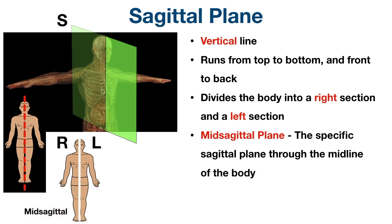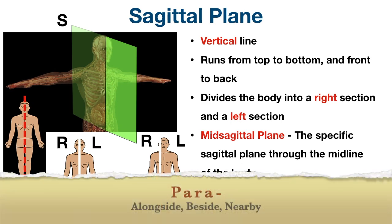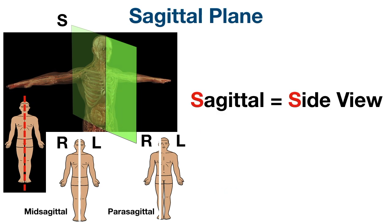The pictures on screen are examples of a mid-sagittal plane. A parasagittal plane is any sagittal plane off center, dividing the body into unequal right and left portions. Parasagittal planes run parallel or alongside the mid-sagittal plane but are not in the midline. The prefix 'para' means alongside, beside, or nearby — so a parasagittal plane is a sagittal plane that runs alongside the mid-sagittal plane. An easy way to remember the sagittal plane is that sagittal and 'side view' both start with S — cutting through the sagittal plane gives you a side view of the body.